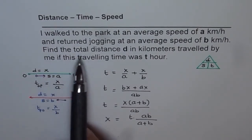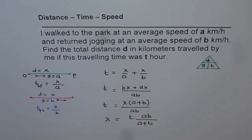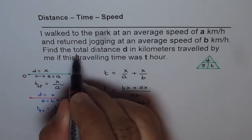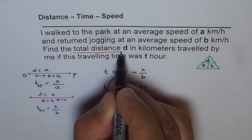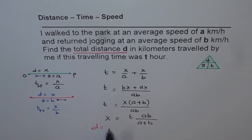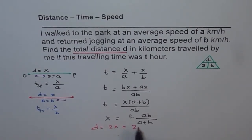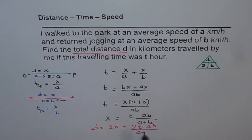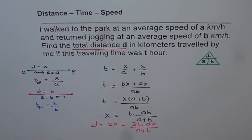Now when we find total distance, remember that is the critical step — you may miss it. Total distance D will be 2 times X, which equals 2 times T times AB divided by A plus B. So that is the total distance D, and that is how you solve this question.